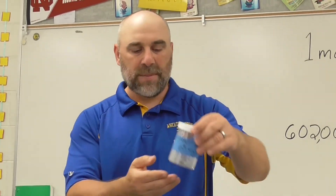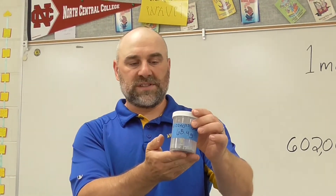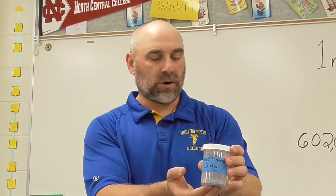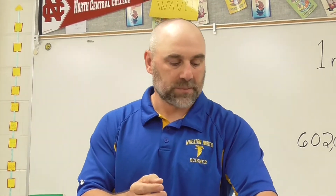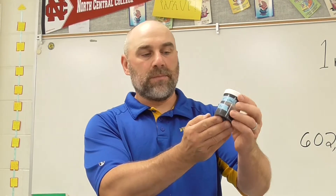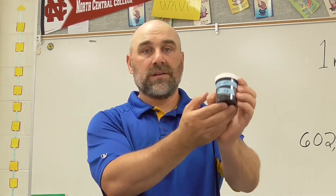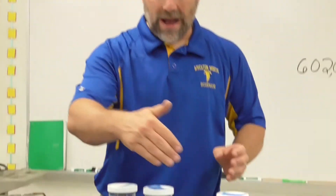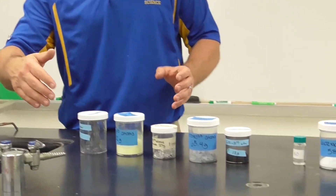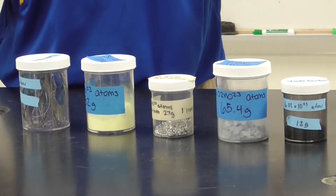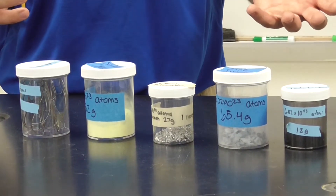Here would be another metal, a mole of zinc — again, 65.4 grams. And then this one is another non-metal, carbon, which has a mass of 12 grams. You can also see that there's a wide variety in the mass of one mole of atoms of a particular element.